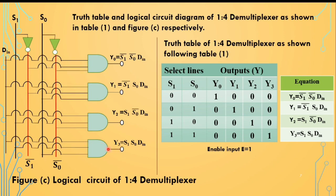In this way we get the output, and this output is equivalent to the truth table. We have successfully drawn the logical circuit diagram of the 1 by 4 demultiplexer as well as its truth table.